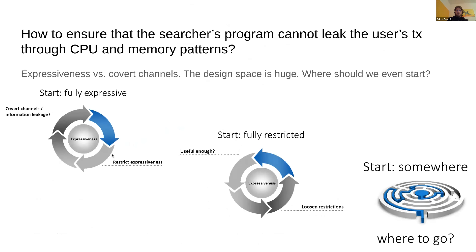There are different ways to go about this — there's a trade-off between how expressive the searcher program should be versus the existence of covert channels. We could start with a fully expressive program and then restrict it — don't allow network communication, prevent for loops, and so on — but there's always the question of whether leakage remains. Or we could start with a fully restrictive program and ask: is it useful? If the searcher program can't do anything, it's obviously useless. We could also start somewhere in the middle. The question is: where should we go from there?